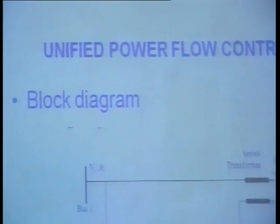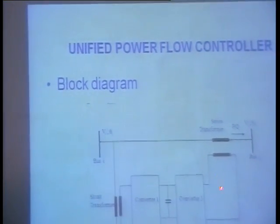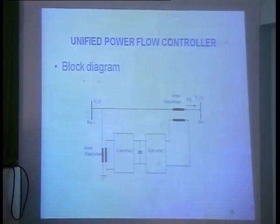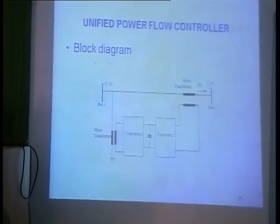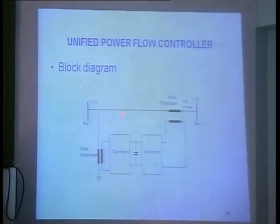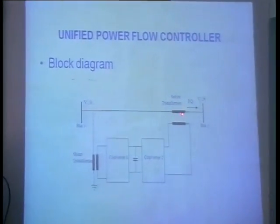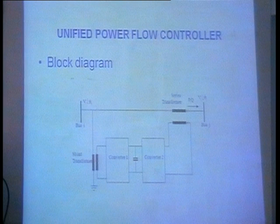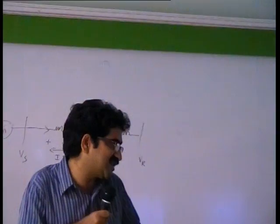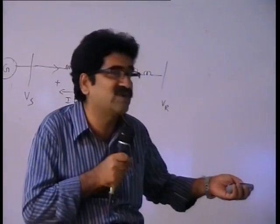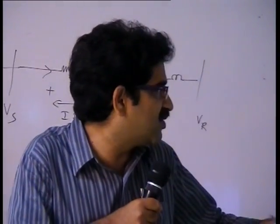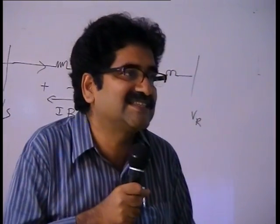The 2.2 kV AC is converted into DC via a rectifier, and then an inverter converts the DC back into AC. This injected AC compensates for the IZ drop in the series impedance of the transmission line, so the receiving-end voltage will be very close to the sending-end voltage.